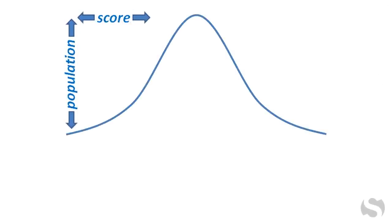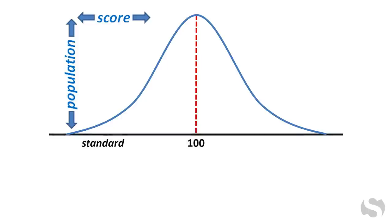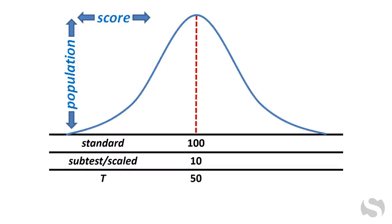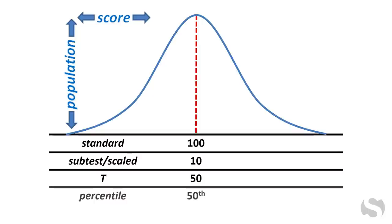There are several types of standard scores, but they all are organized under the bell curve. Most standard scores have a mean of 100, such as intelligence or IQ scores. Subtest or scaled scores range from 1 to 19, with 10 being the mean. For T scores, 50 represents average performance. With percentile scores or ranks, 50 is average. If a student earned a percentile score of 56, then his performance was as strong or better than 56 out of 100 other students his age who also took the test.